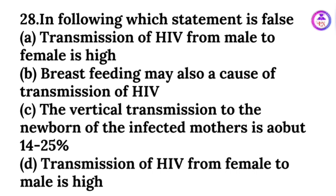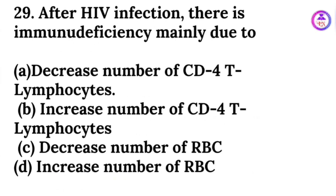Transmission of HIV from female to male is high — the statement is FALSE; rest all are true. After HIV infection, there is immunodeficiency mainly due to decreased number of CD4 T lymphocytes. The answer is option A.